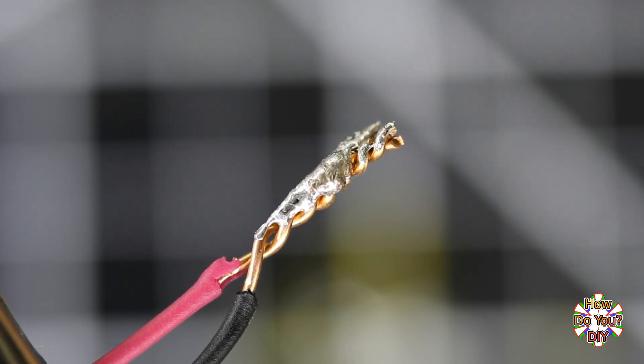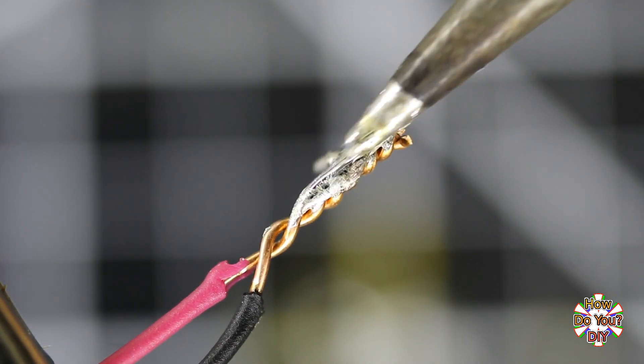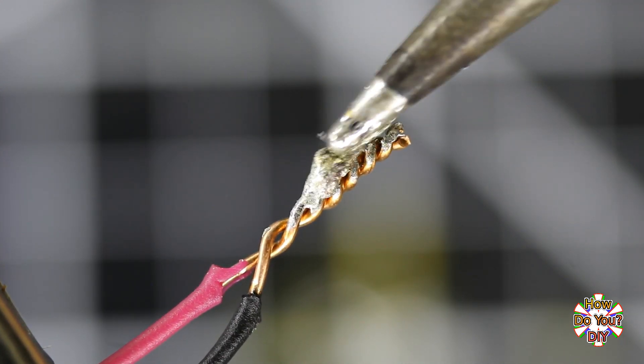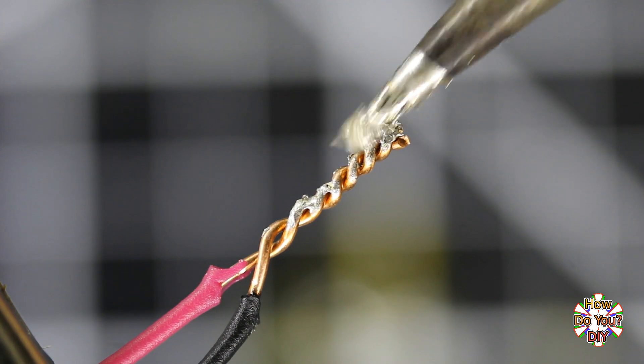I already have some melted solder on my soldering iron. You can see that it does kind of stick to the wires, but it's mostly just sitting on the surface and not really bonding with the copper.